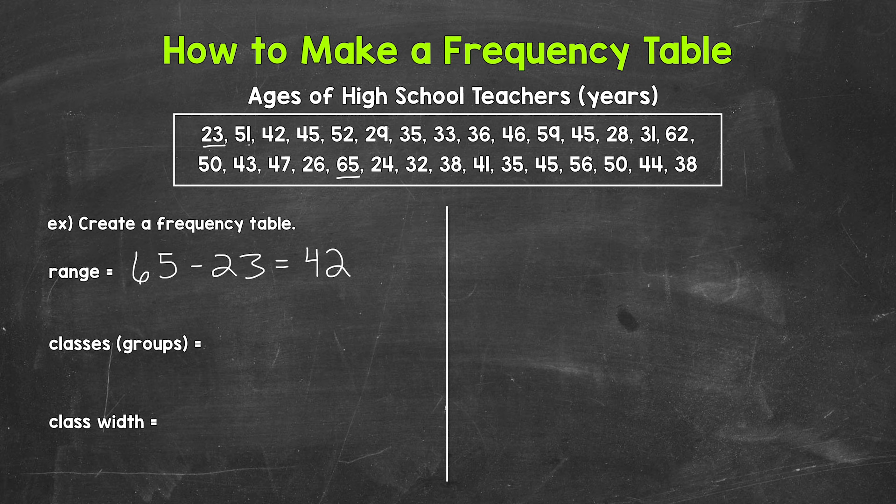Seeing that our range is 42, we're not going to want to write each individual number within our table. We don't want to start at 23 and then count up to 65. That table would be extremely long. And then also the frequency for each value, each age would be only one or zero. We may have a two here or there. That would not be the best way to set this table up. So we're going to make a grouped frequency table. We will have groups called classes or class intervals that the ages will fall within. So the next thing we need to do is determine the number of classes, the number of groups we want. For this example, let's use five classes.